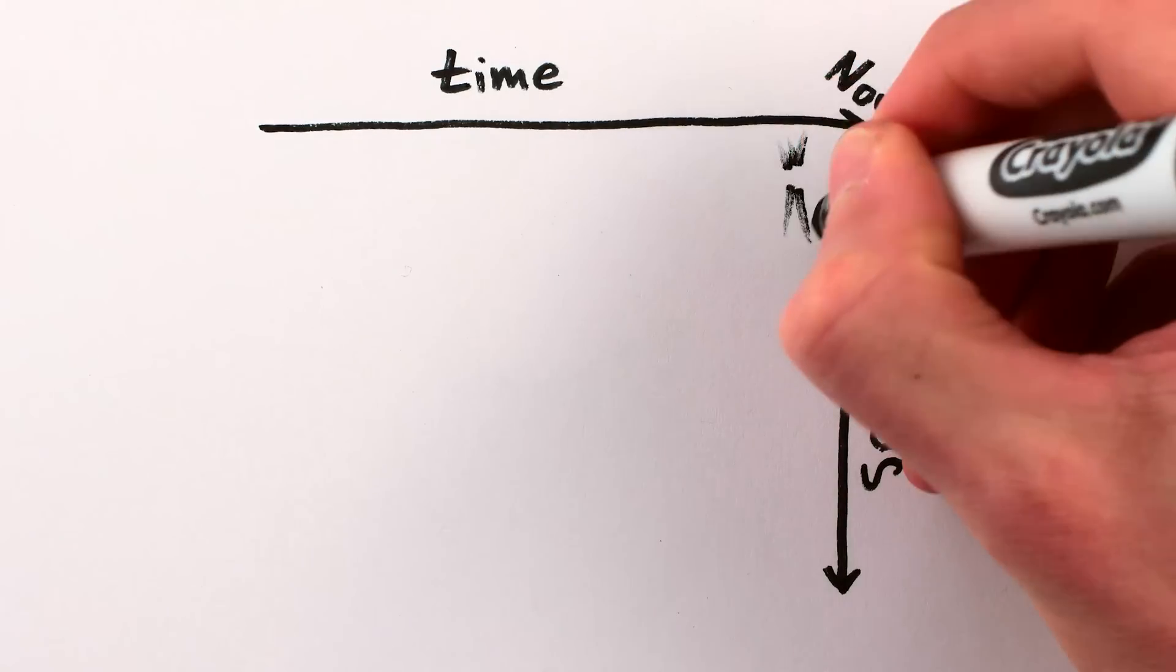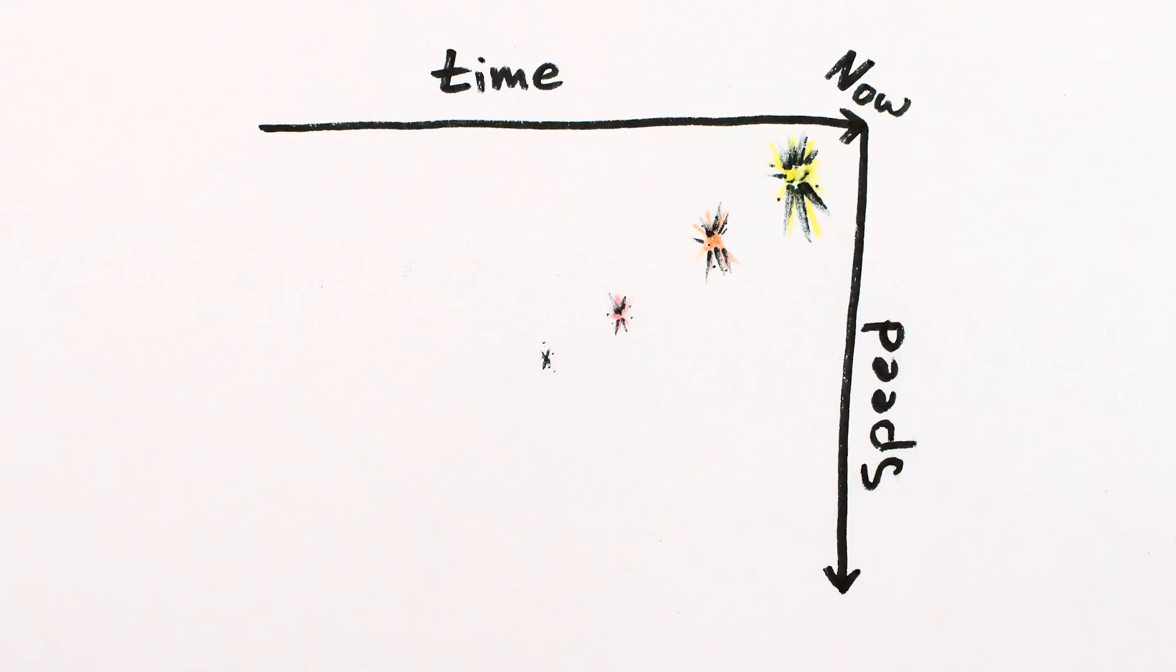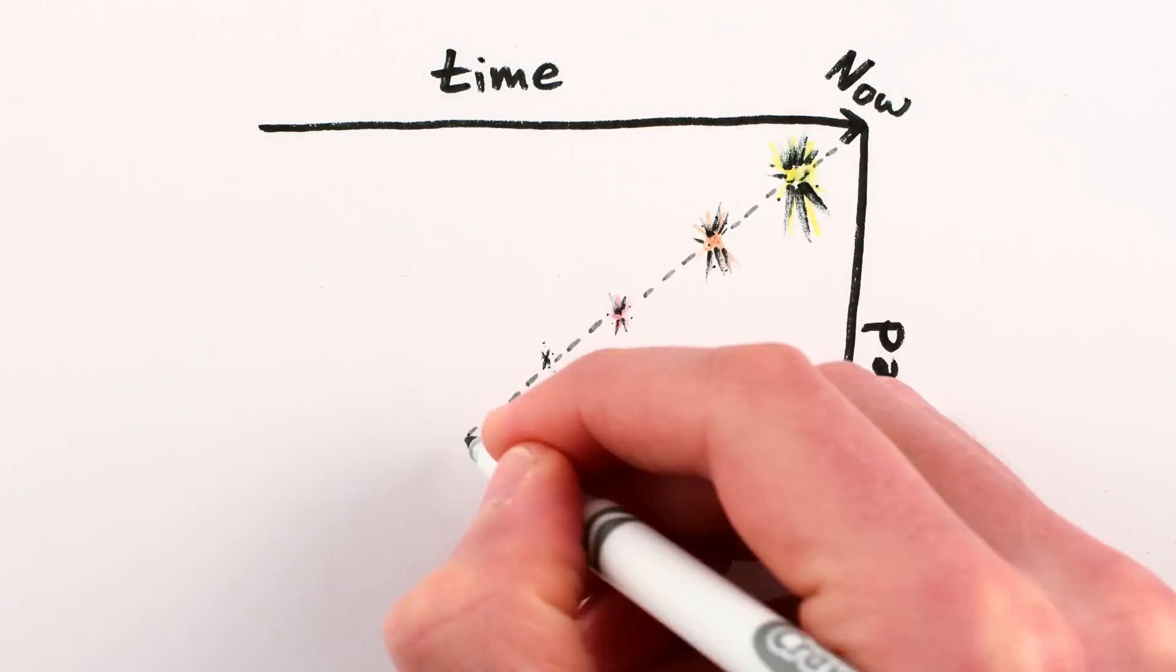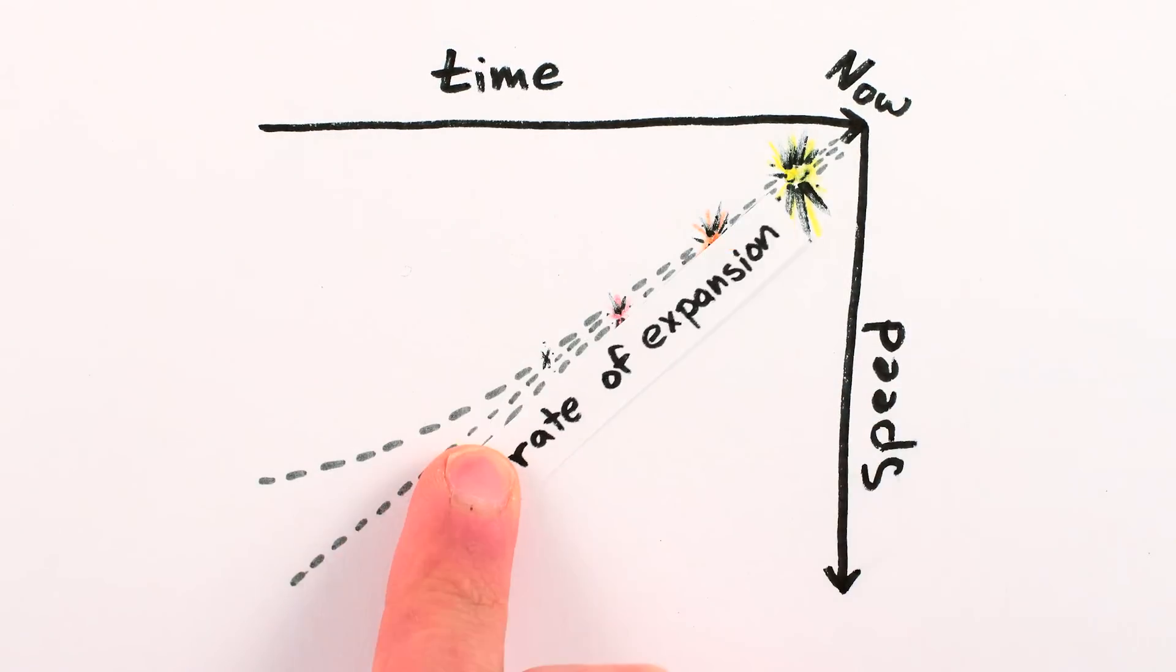By measuring the speeds of different supernovas at different distances, aka different times in the past, we can plot the expansion of the universe over time. A straight line means the universe is expanding at a constant rate. A curve means it's speeding up or slowing down.